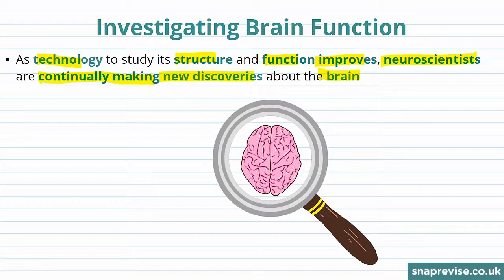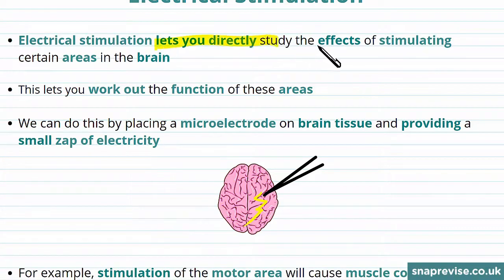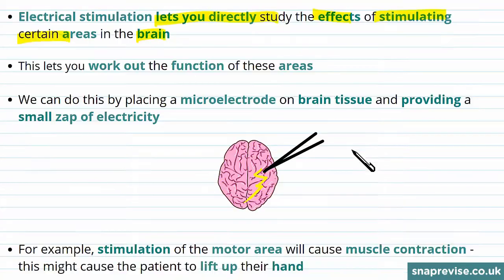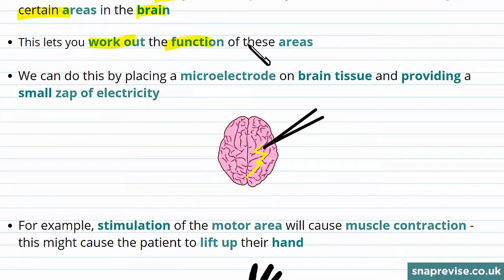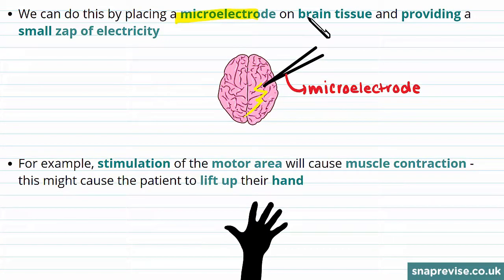One way of investigating brain function is through electrical stimulation. Electrical stimulation lets you directly study the effects of stimulating certain areas of the brain, which lets you work out the function of these areas. We do this by placing a micro electrode — shown here — on brain tissue, which provides a small zap of electricity that stimulates that part of the brain.